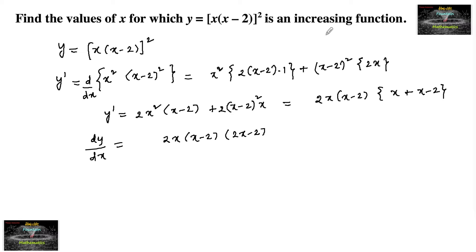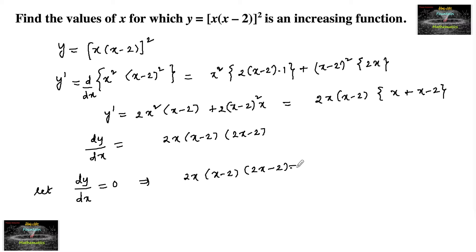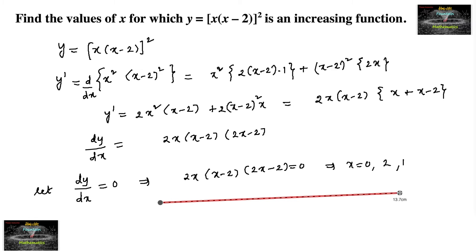Now to decide whether the function is increasing in which interval, let's set dy/dx = 0. So 2x(x-2)(2x-2) = 0, giving x = 0, x = 2, and 2x-2 = 0 means x = 1. So the three critical points are x = 0, x = 1, and x = 2, which divide the real line into four parts.